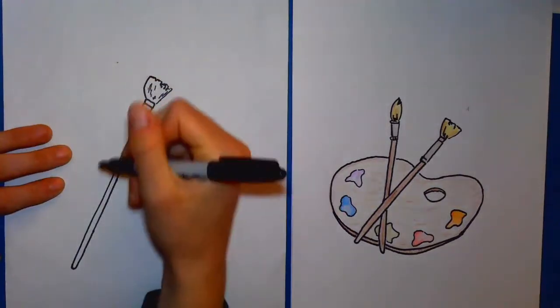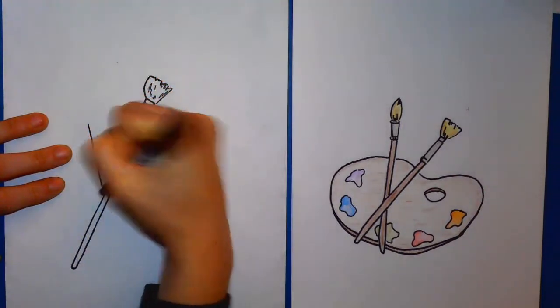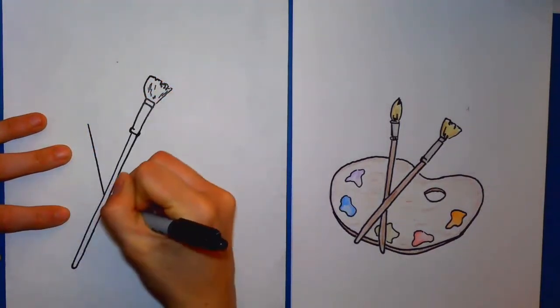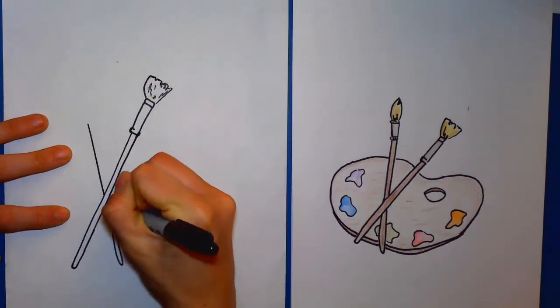And then we're going to add the other paint brush behind it. So you're going to do a diagonal line down. Stop where it contacts with your first brush, and start again on the other side. Turn it around and back up.